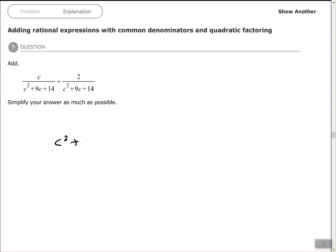So we can write the c plus 2 all over that. However, the denominator can be factored, I believe. So let's see, do we have any factors of 14, or numbers that I can multiply to get 14 that will also add up to be 9?